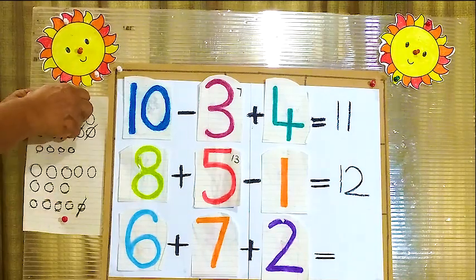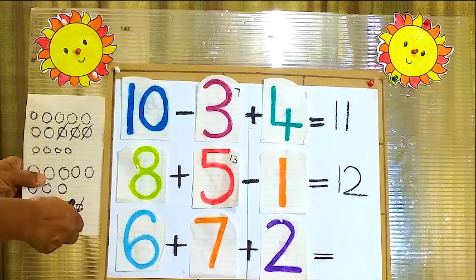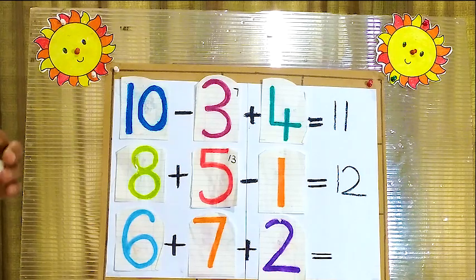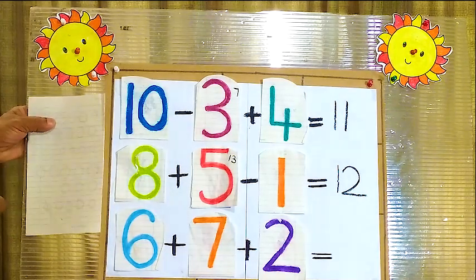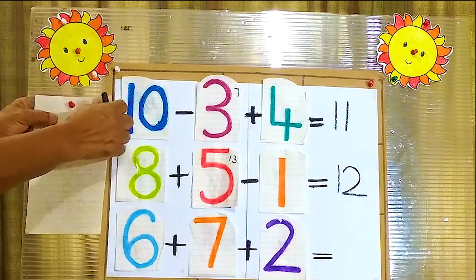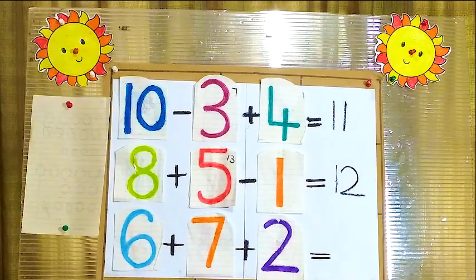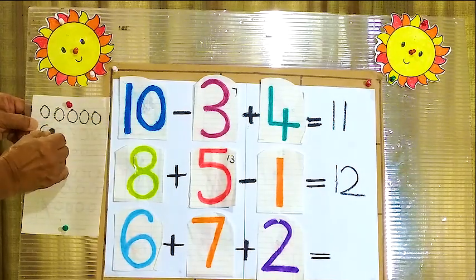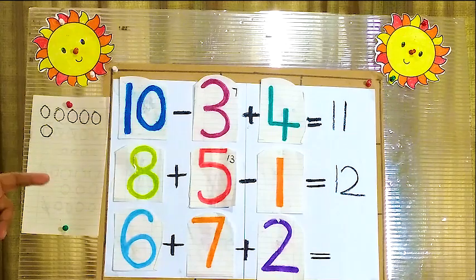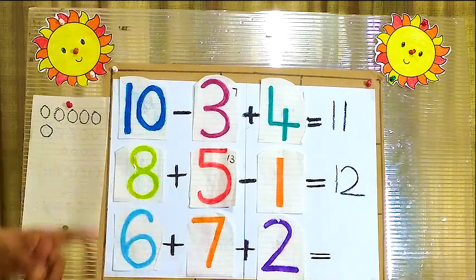We will go to the next number. What is the next number? Here number 6 plus 7 plus 2. That is very different from the other sums — we have to add all the numbers. Now the first one is number 6. For 6 I am going to draw 6 balls: 1, 2, 3, 4, 5, 6.